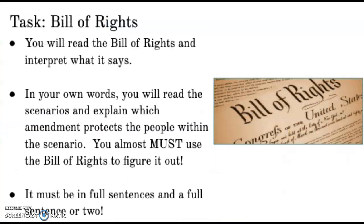What you're going to do today is use the Bill of Rights that I'm putting on our Google assignment, and then use it against scenarios. There are five scenarios — they are stories. Each one of those stories has to do with an individual right and an individual whose rights were either infringed upon by the federal government. You need to identify which Bill of Rights amendment protected the individuals under each scenario.